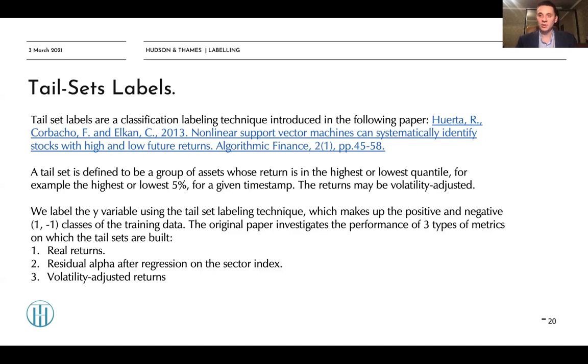So tail sets labeling actually helps us to implement that type of approach. We label the variable using the tail set labeling technique which makes up the positive and negative classes of the training data. The original paper investigates the performance of three types of metrics on which the tail sets are built: real returns, residual alpha after the regression on sector index, and volatility adjusted returns. So actually what tail sets labels do is that they rank the returns of your investment universe, for example S&P 500 stocks.